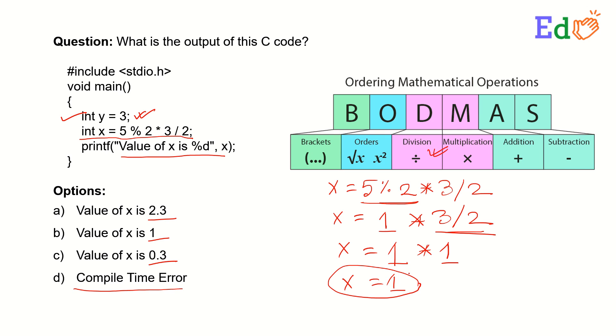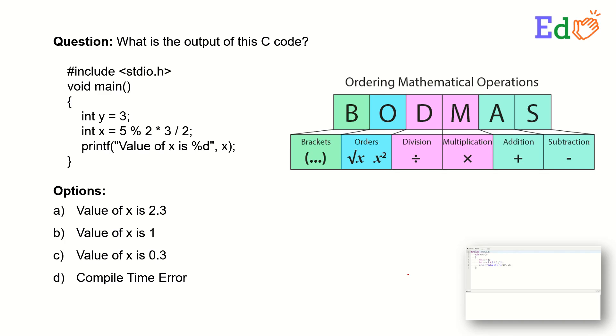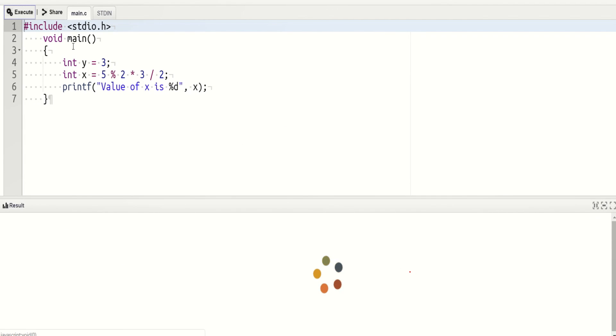Let's run this program with this compiler. Let's check it out, just compiling. Correct. Whatever I have told, the value of x remains 1 here.